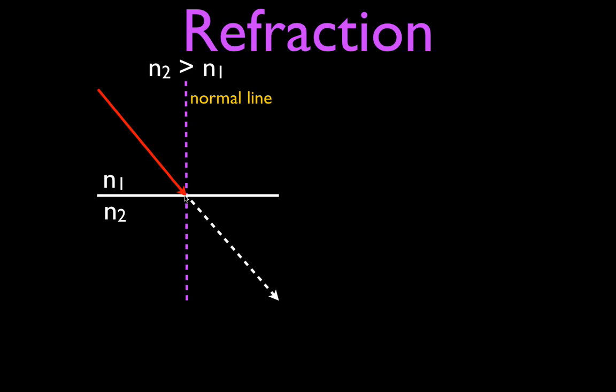Now let's figure out what happens to the ray of light when it crosses that boundary. When a ray of light goes from a material with a lower index of refraction into a material with a higher index of refraction, it is going to bend towards the normal line. If the light went straight it would continue on, but I bent it towards the normal line. So it comes through, crosses the normal line, and bends towards the normal line.